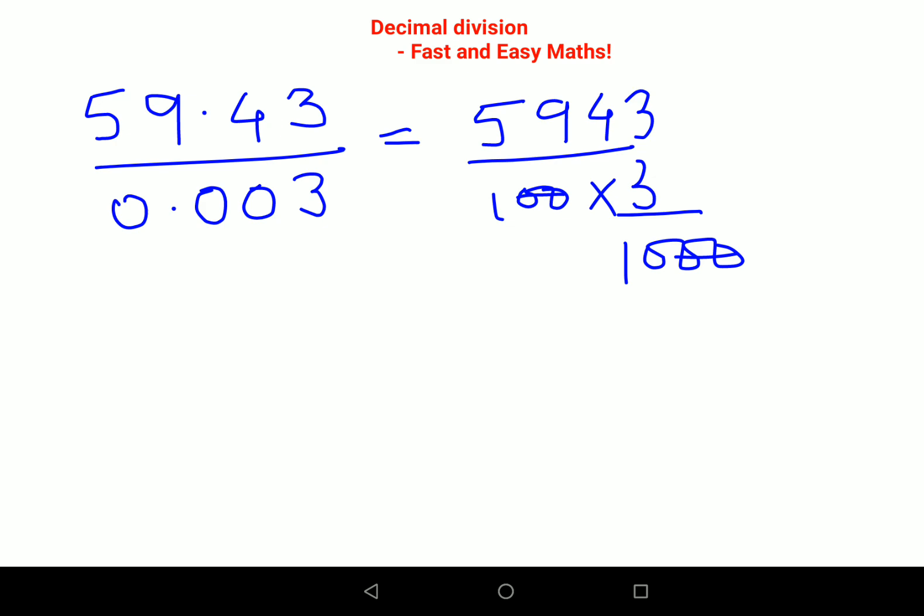Here the zeros are cancelling. Please remember, whenever you come to a situation where you have a denominator to your denominator, then all you have to do is this number can get directly multiplied to the numerator. So whatever answer you get will get multiplied by 10. 3 you will cancel and you are left with 19,810. So final answer for this one will be 19,810.